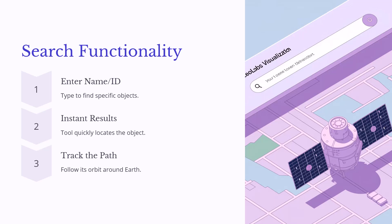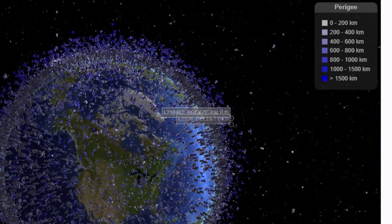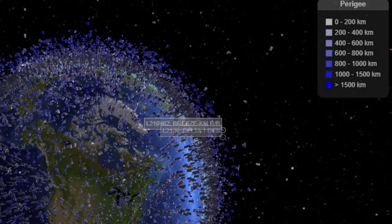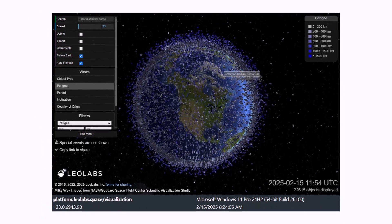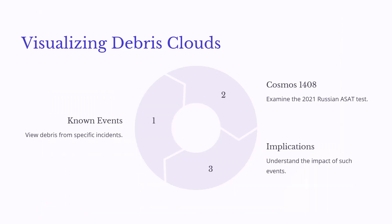Here we're looking at the perigee — that's the distance of the lowest point closest to the Earth. Visualizing debris clouds: there are known events, such as Cosmos 1408, and we can understand the implications of the impact of such events.